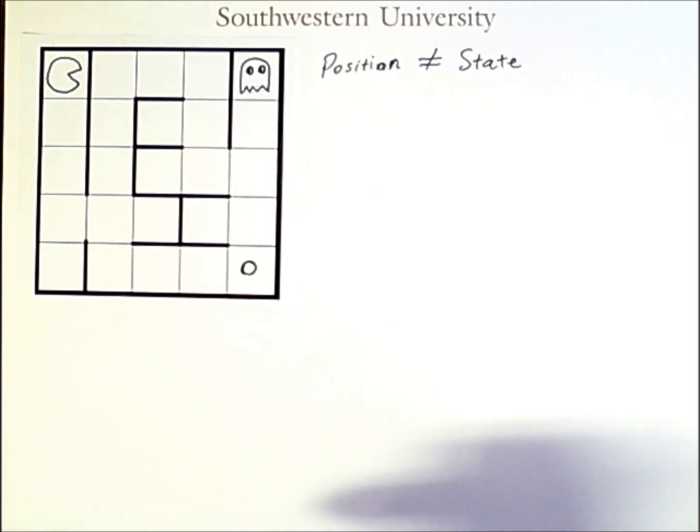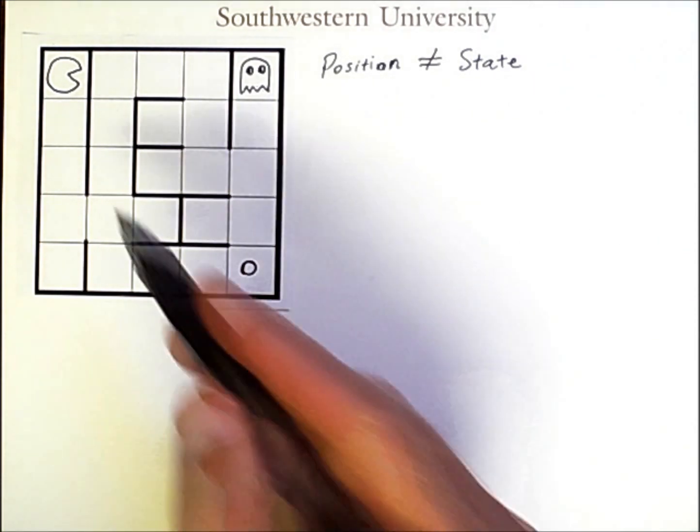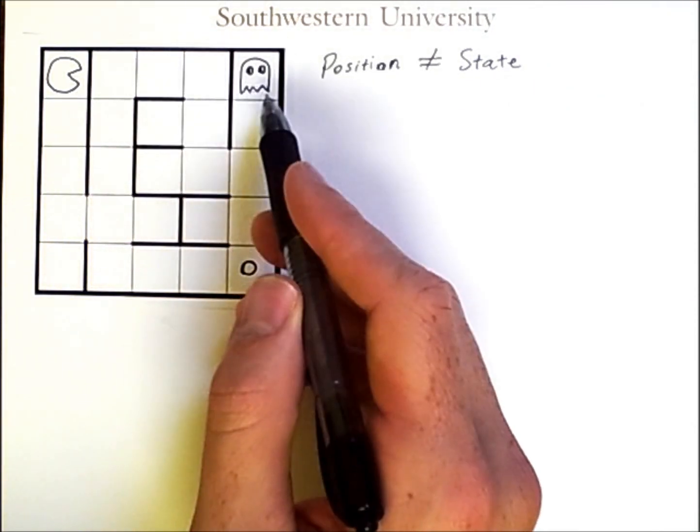Now, we can't model this using the techniques we know so far if the ghost's behavior cannot be modeled. However, let's assume that we know exactly how the ghost will behave. That means that we can simply model the state as the position of Pac-Man and the position of the ghost.